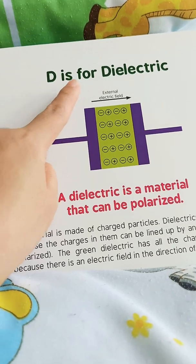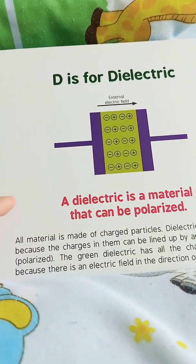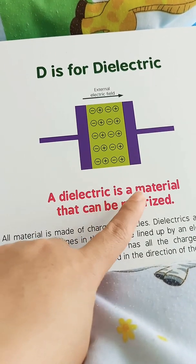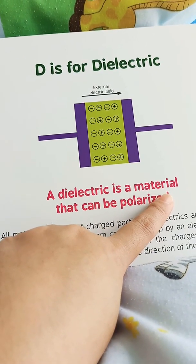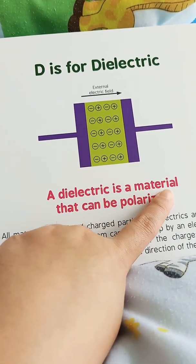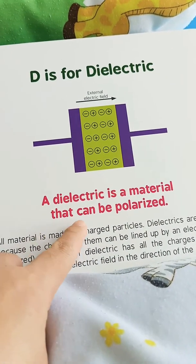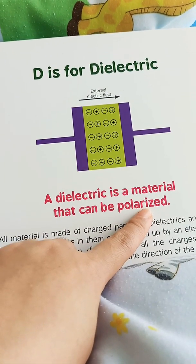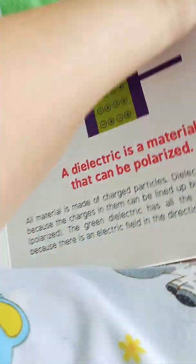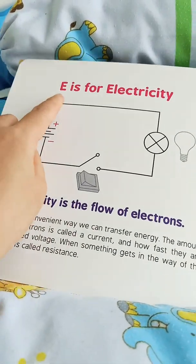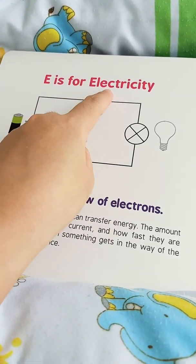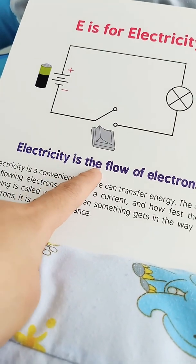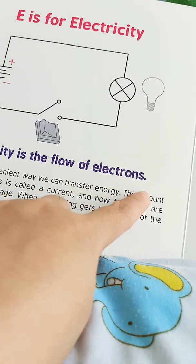D is for Dielectric. A Dielectric is a material that can be polarized. E is for Electricity. Electricity is the flow of electrons.